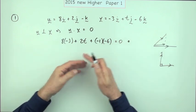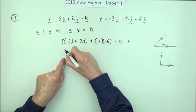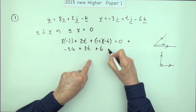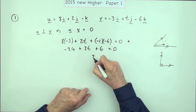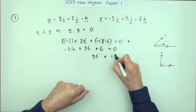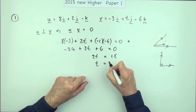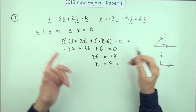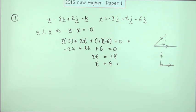So we've got negative 24 plus 2t plus 6 equals zero. 2t, bringing that over, that's negative 18, bringing it over is 18. And then t divided by 2 is 9. And that's the second mark. It's all very straightforward as far as the marking is concerned. Nice little two marks to start off with.